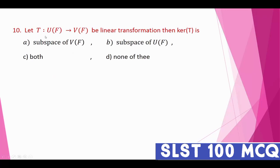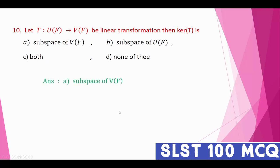Question number ten: let T be a linear transformation from U_F to V_F. Then the kernel of T is — by definition the kernel of T is the subspace of U_F. All elements that map to zero belong to the kernel. The correct answer is subspace of U_F.